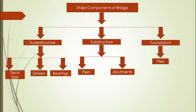Moving on to the major components of a bridge. The entire bridge structure can be divided into three components. The first one is the superstructure, the second one is the substructure, and the third one is the foundation. The portion of the structure which directly receives the live load from the moving traffic is called the superstructure. It transfers the load from the traffic to the substructure below it. The superstructure includes three components: the deck slab, the girders, and the bearings. We will be learning about them in detail in the upcoming slides.